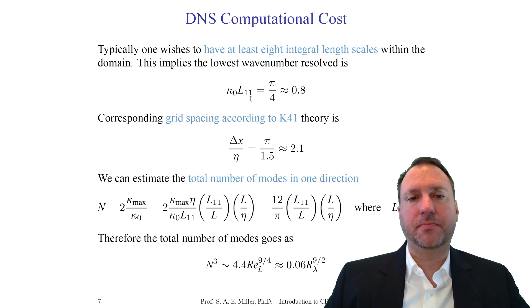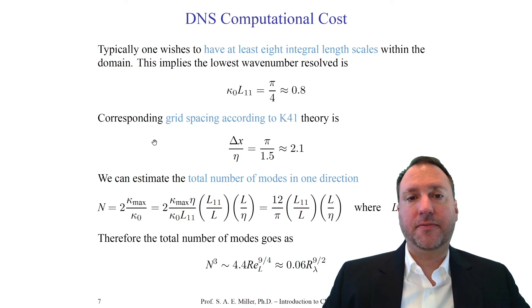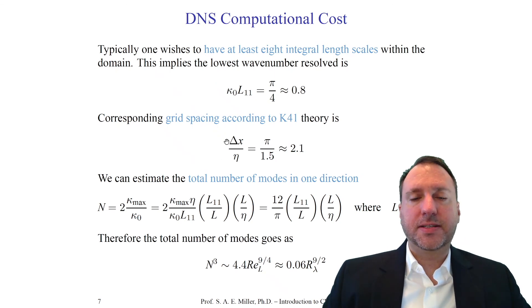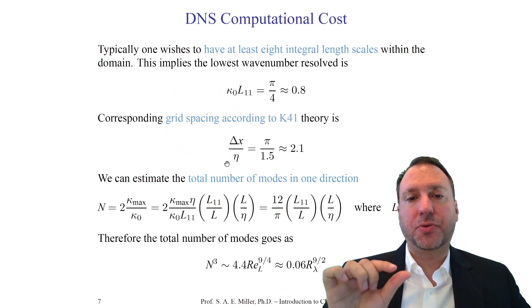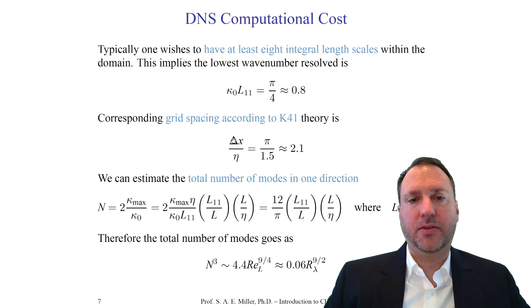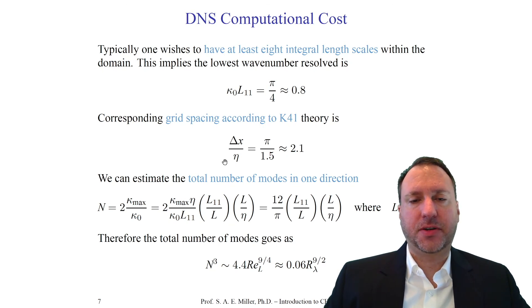Knowing the viscosity and integral wave number, we can estimate the smallest scales from Kolmogorov theory. Grid point spacing delta x divided by the Kolmogorov length scale goes as π/1.5, giving about 2.1. This is not a huge range for these values, but as the Reynolds number increases, the number of decades between L and eta increases significantly, requiring very small grid point spacing.